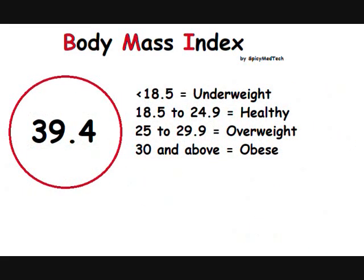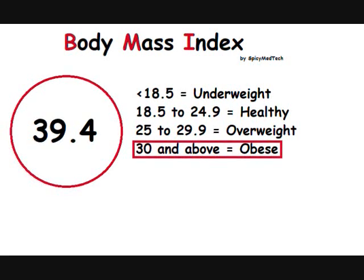Anything below a BMI of 18.5 means an individual is underweight. Anything between 18.5 and 24.9 means an individual is within healthy weight. A BMI above 25 but not more than 29.9 means an individual is overweight. And finally, an individual with a BMI of 30 and higher is considered obese.